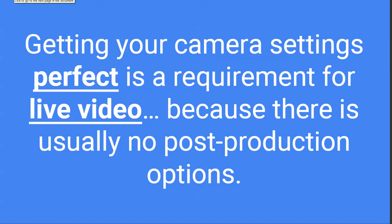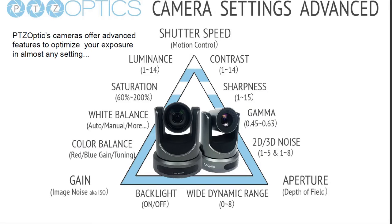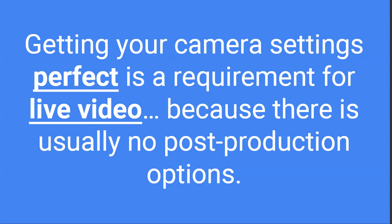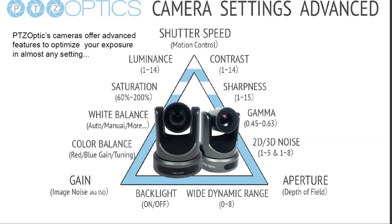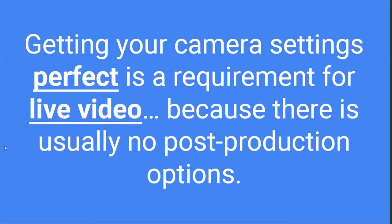Getting the camera settings perfect is a requirement for live video because we normally don't have a lot of post-production options. In many software packages including Wirecast, Vmix, and TriCasters we do have the ability to make some adjustments, and that's usually a good idea. But on the whole, the most popular approach is to get all the camera settings right first and then use your streaming software afterwards.